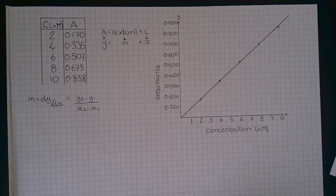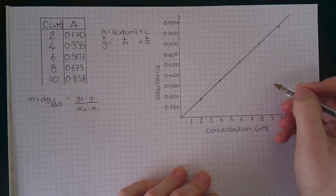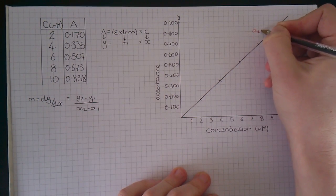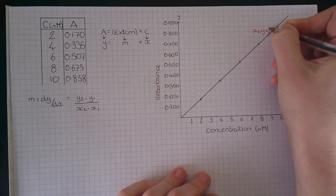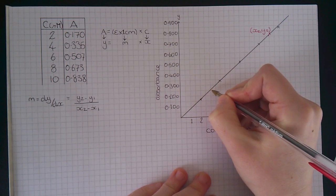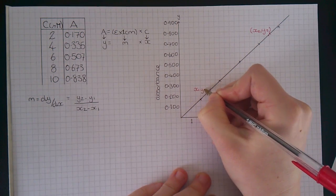I'm going to use points where x is 9, which will be x2 and y2, and where x is 3, which will be x1 and y1.